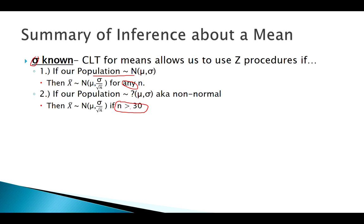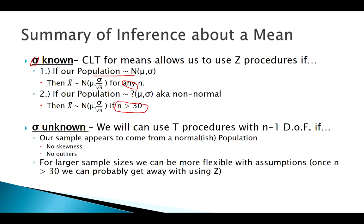To sum up: when we know Sigma we use Z, assuming normality or n at least 30. When we don't know Sigma and have a small sample, we now have an alternative — the T distribution — as long as we meet the assumptions of no skewness and no outliers. Once our n is large enough, the central limit theorem holds and we're flexible. Thanks for tuning in; we'll look at examples of this later.